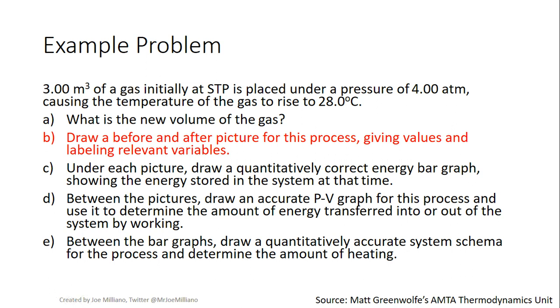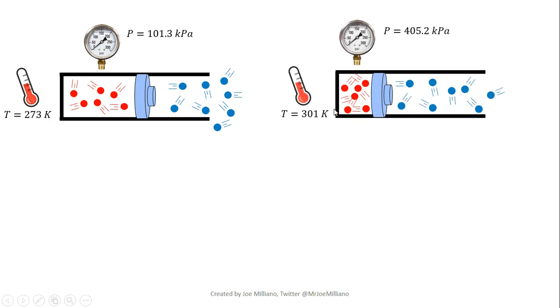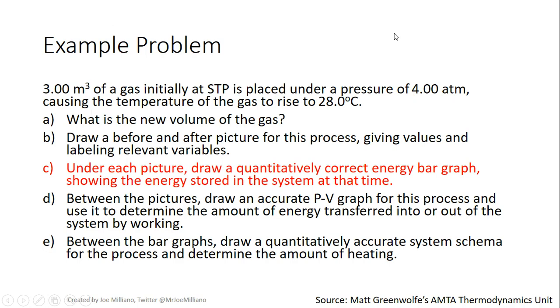Next let's draw a before and after picture for this process given the values and labeling the relevant variables. Here I've drawn a sample of gas. This is the system inside the gas, it's at STP. You can see it's at standard pressure and temperature. And then in the second situation in snapshot B the piston has compressed the gas because the volume went down, the temperature went up, and the pressure went up.